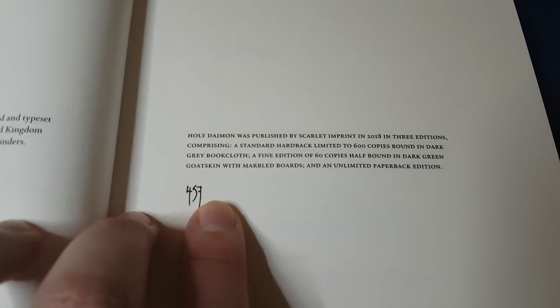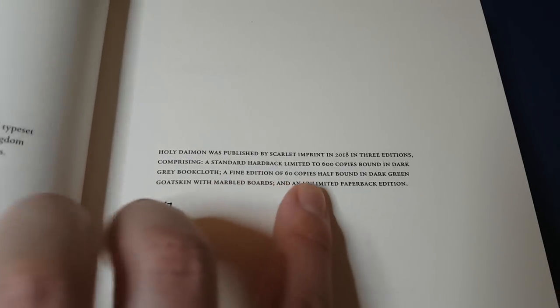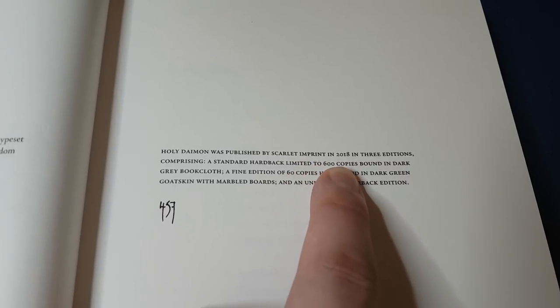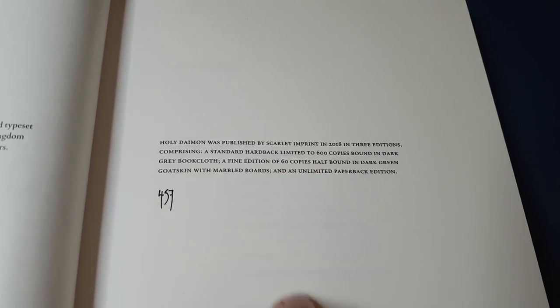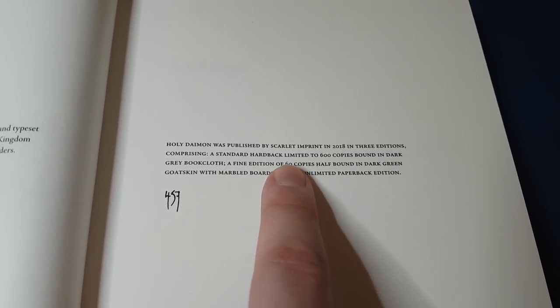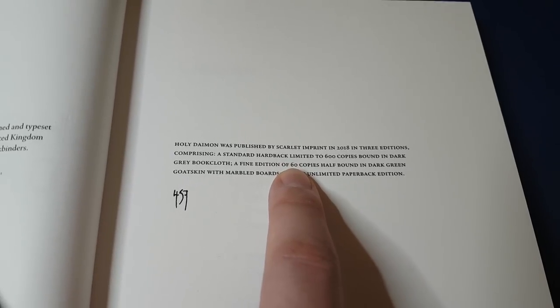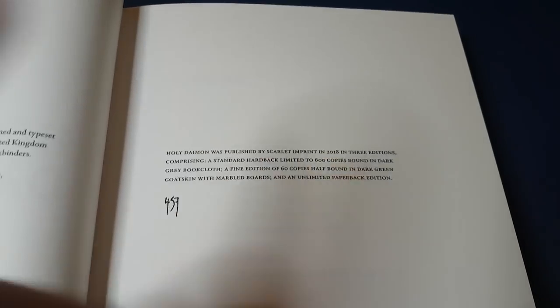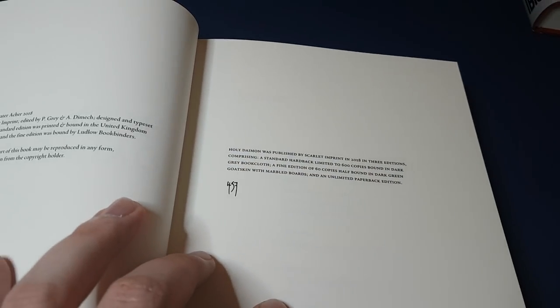So let me show you what the contents of this book are. So I think I showed you this in the previous video. This is one of the 600 copies bound in dark grey book cloth. I wish I could get my hands on one of those 60 copies half bound in dark green goat skin with marbled boards. But, you know, maybe as a vegetarian it's not such a bad thing.